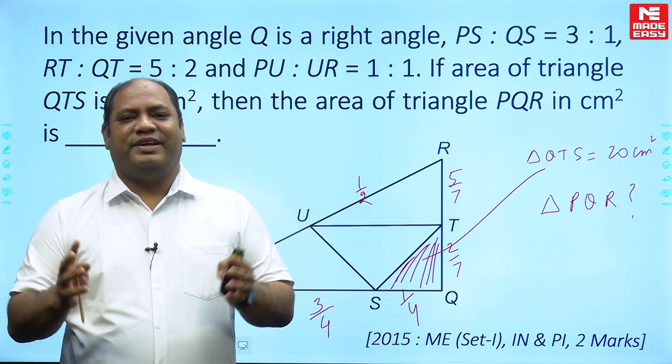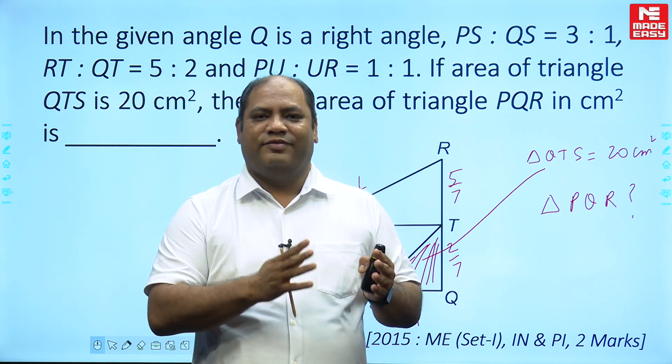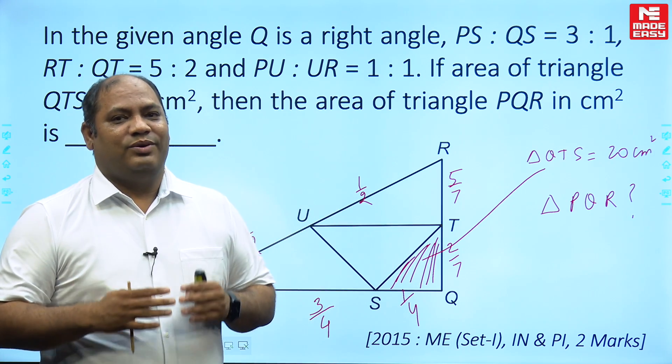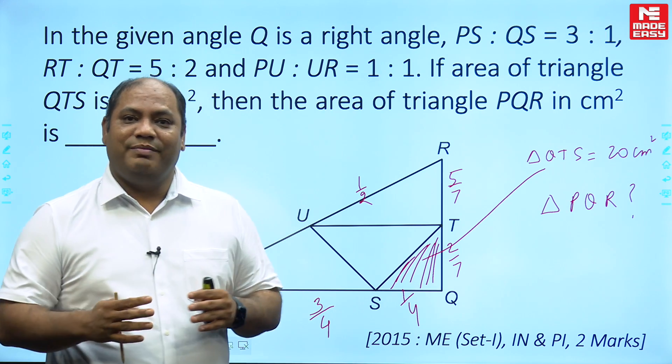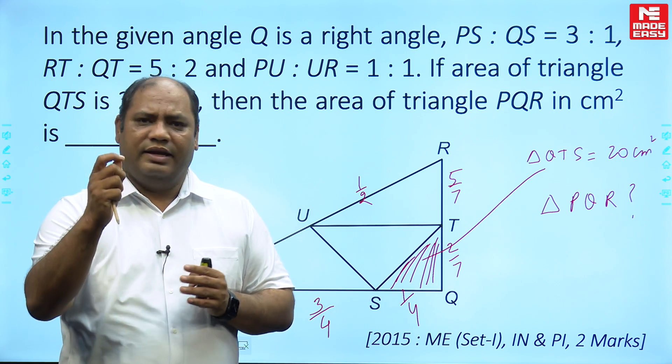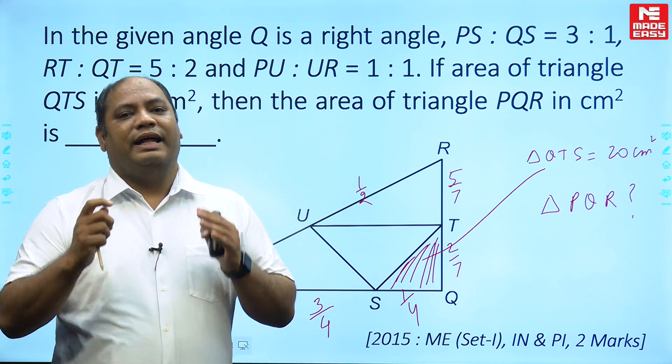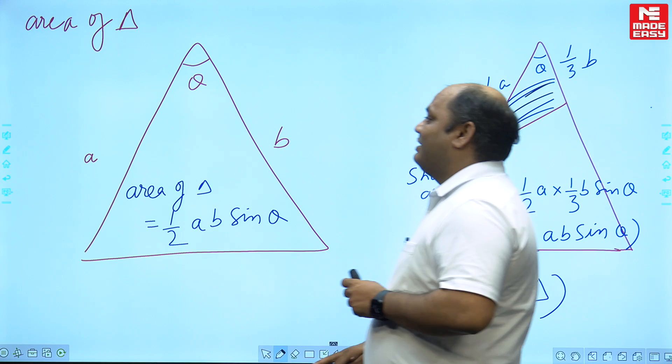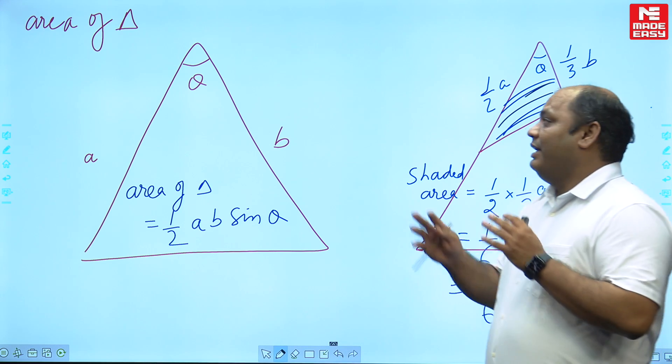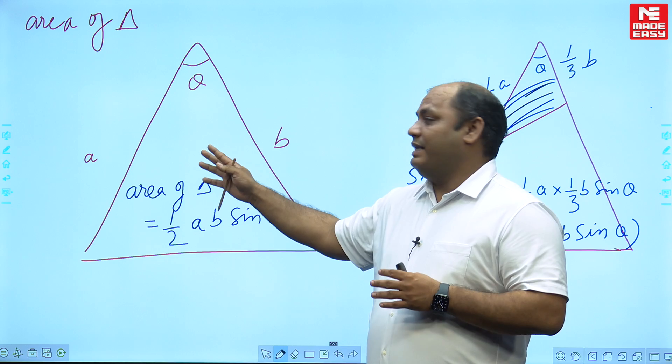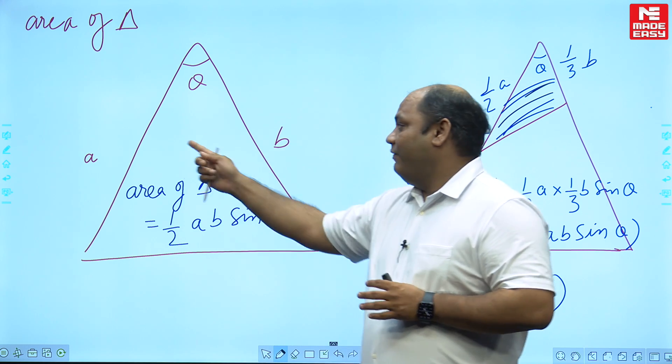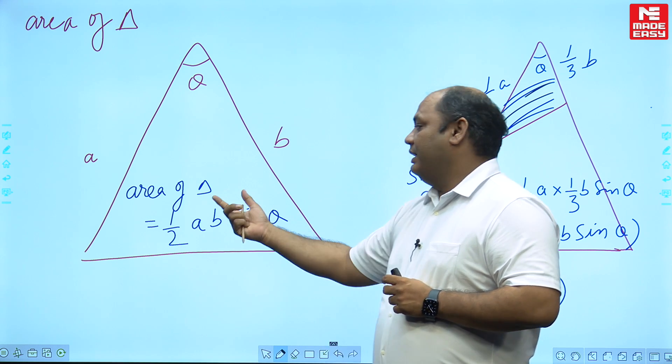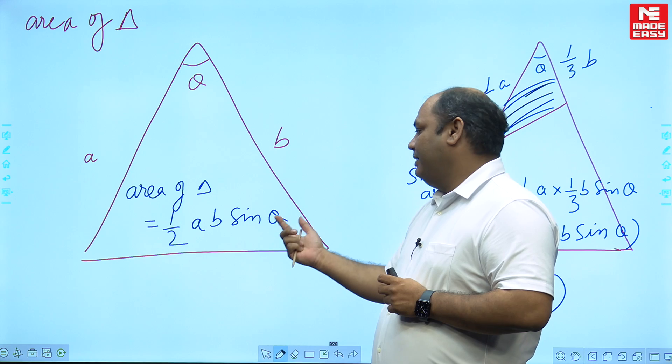Area of triangle has many formulas, like half base into height or Heron's formula. Or another formula which I will tell you - remember it's called half a b sin theta. So let's learn about this concept. Learn it for around one minute and then we'll come back to the trick part of it.